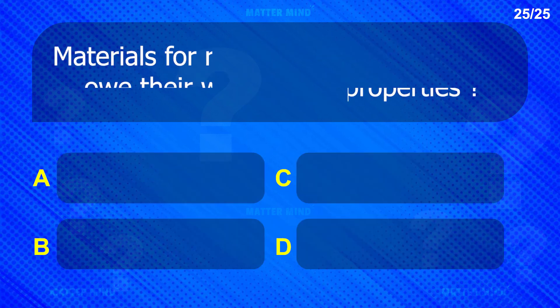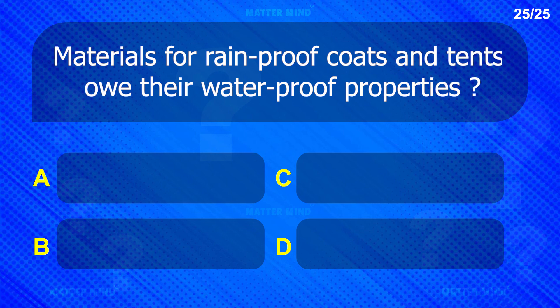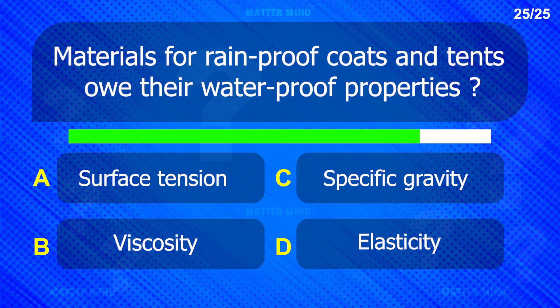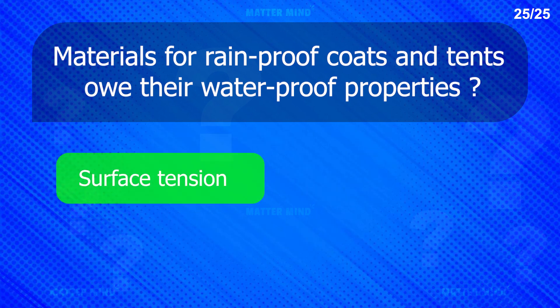Materials for rainproof coats and tents owe their waterproof properties to surface tension.